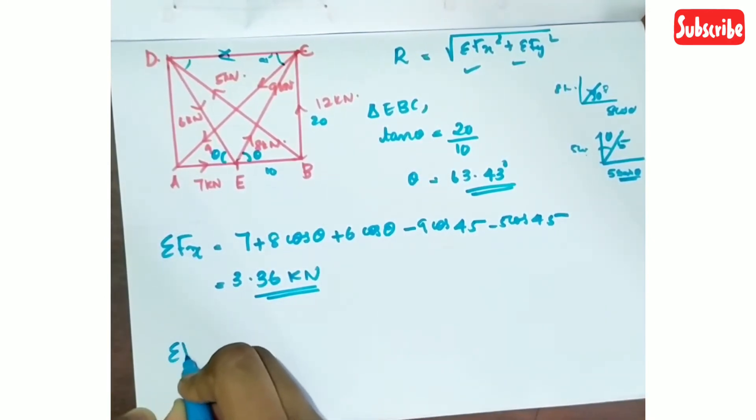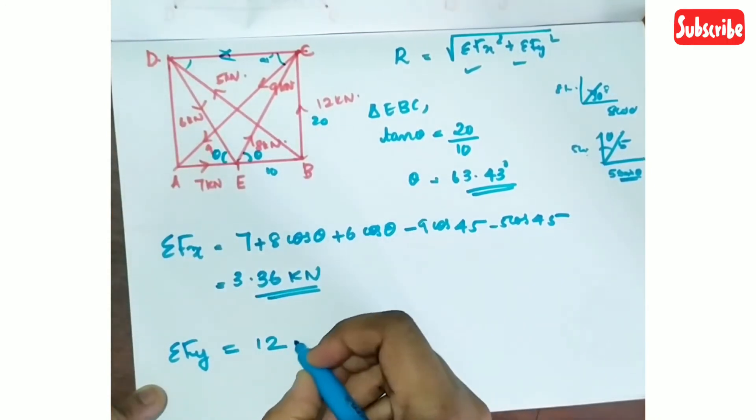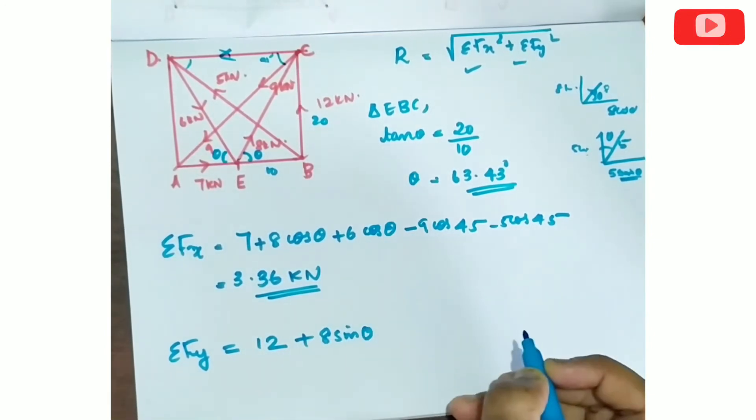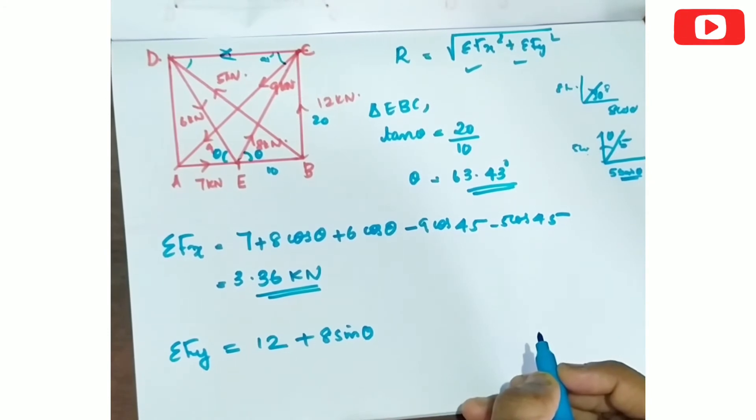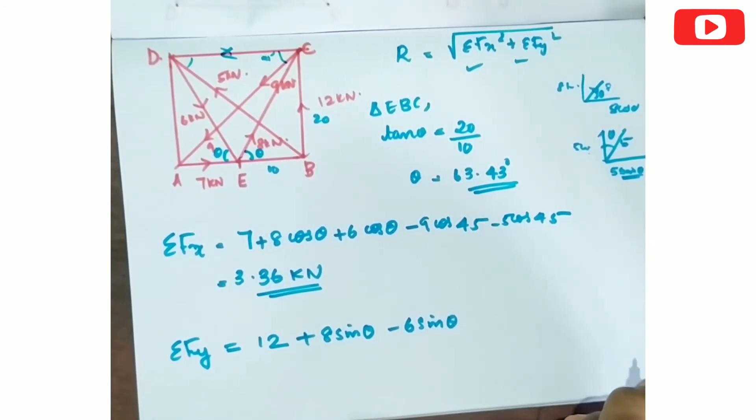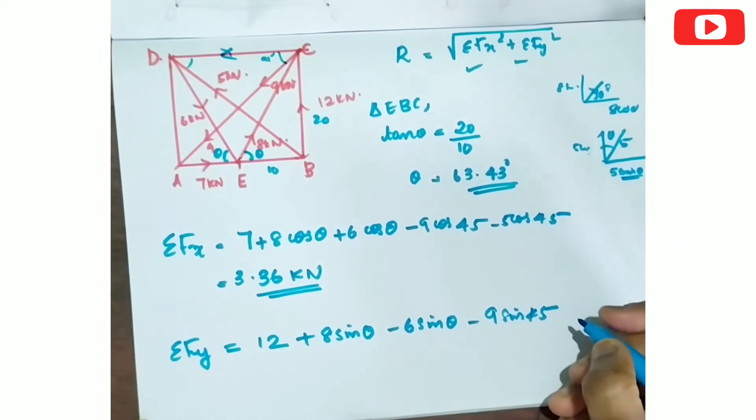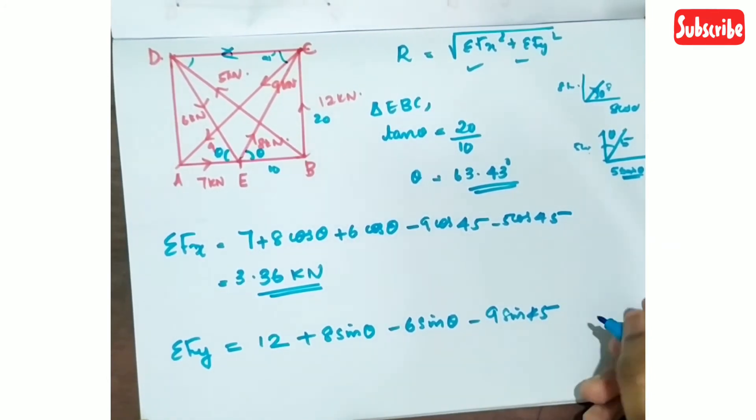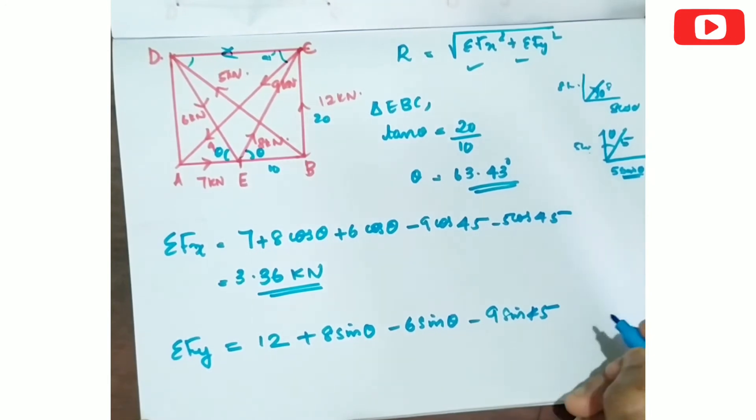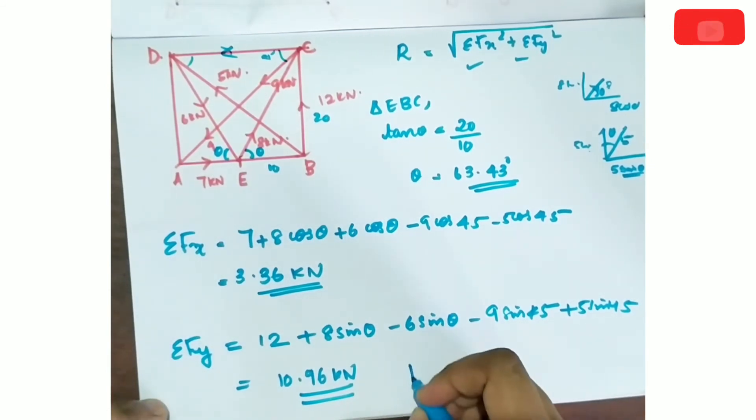Now sigma Fy for vertical forces. Force 12 upward is positive. For inclination force EC it's 8 sin theta. Then 6 sin theta. The vertical components: 9 sin 45 and 5 sin 45. BD force is plus sin 45. Solving this gives sigma Fy equals 10.96 kN.